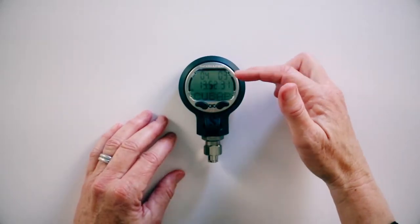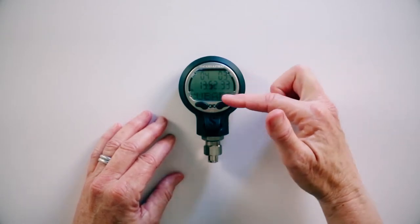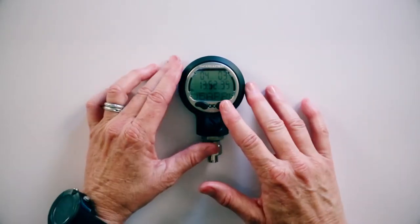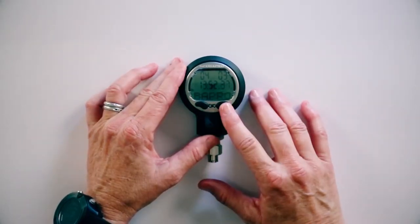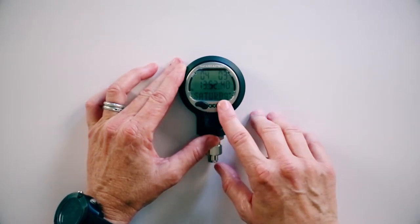Now you can see that we've got date and time and the ScubaPro name scrolling on the bottom. We're going to go through the functions forward. This is the forward button, this is the back button.